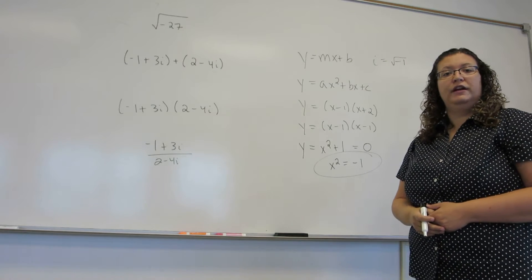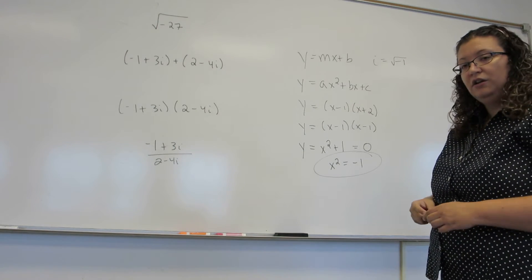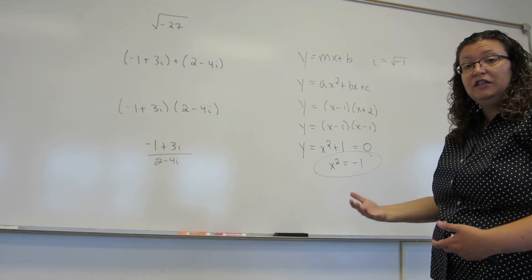i is defined to be the square root of negative 1. It has a little bit of an unfortunate name. We tend to call this an imaginary number because historically they kind of thought they were making them up at the time.